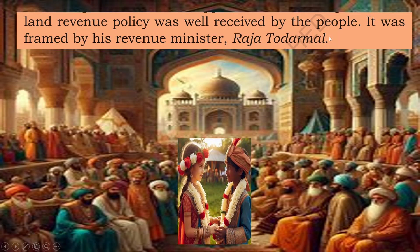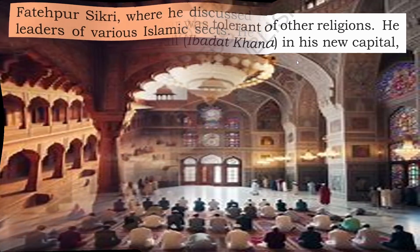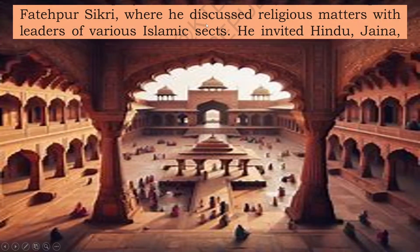Akbar also banned the slaughter of cows and supported both Hindu and Muslim culture — that is why he ruled over the hearts of India. He also opposed child marriage. Akbar's land revenue policy was well received by the people; it was framed by his revenue minister Raja Todar Mal, who was a Hindu minister. Regarding religious policy, Akbar was tolerant of all religions. He constructed a prayer hall in his new capital Fatehpur Sikri, where he discussed religious matters with leaders of various Islamic sects.